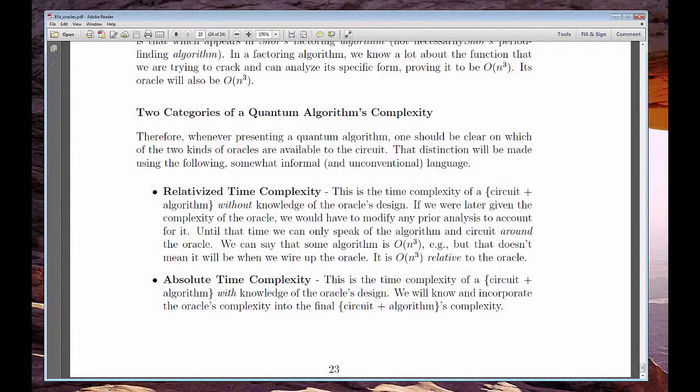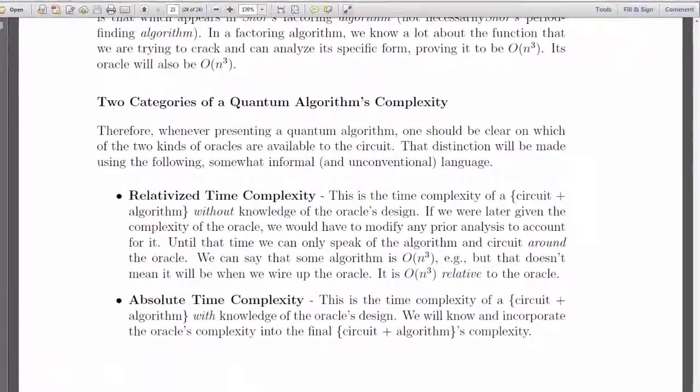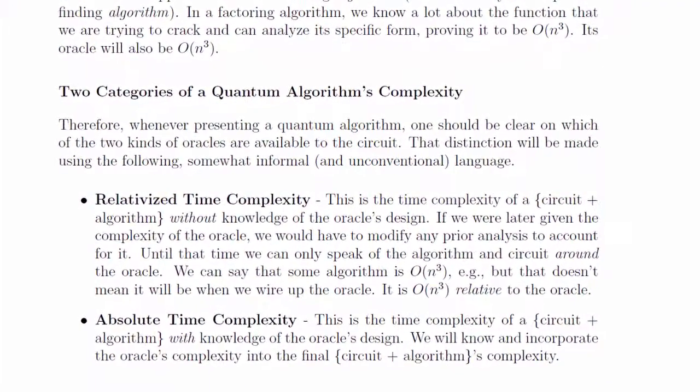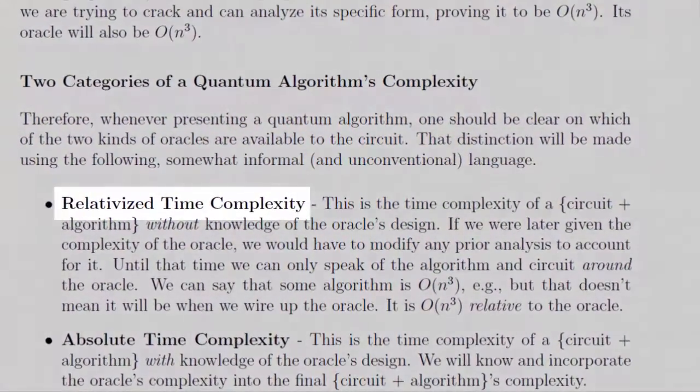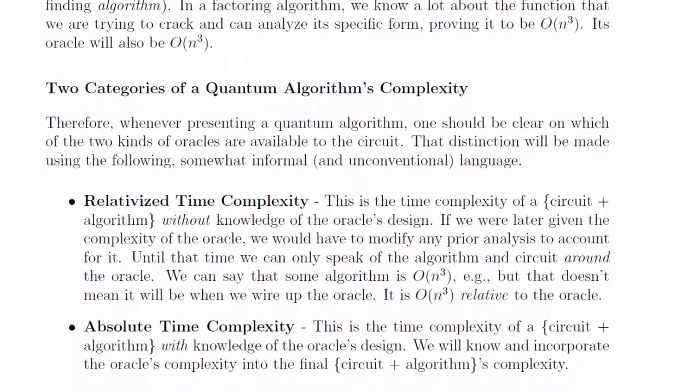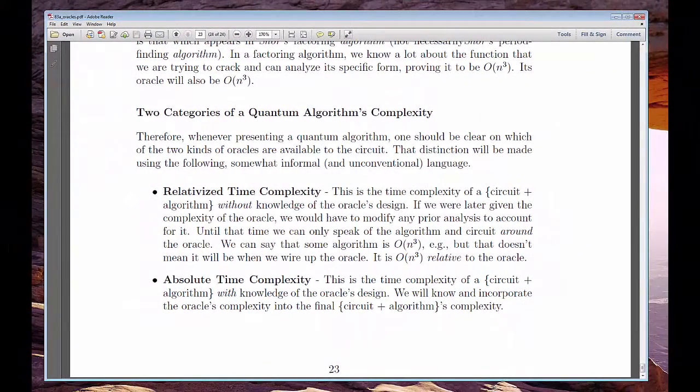With vocabulary. If we don't know the oracle's computational complexity, but we do know that our circuit around that oracle has a better growth rate than the classical algorithm, also measured around, but not including, the function f, then we say we have a relativized speedup. You see, the oracle will have the same time complexity as the function, and a classical algorithm will use the function at its core. So, we compare our solution minus the oracle with the classical solution minus the function. If it's faster, we have relativized speedup.